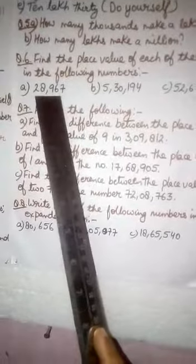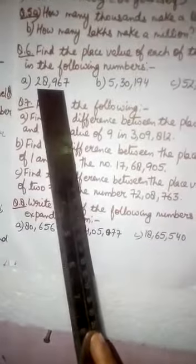Question number 6. Find the place value of each of the digits in the following numbers. In this question, you have to write the place value of each digit in every number.